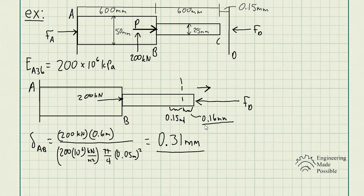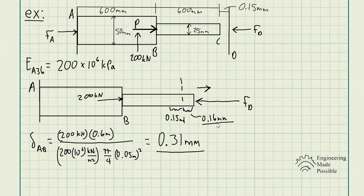It gets a little tricky when dealing with a gap. Keep in mind the initial gap does not contribute to the reactionary force at all because there is no contact. That's why it's important to first solve for the total deformation, and then determine how much force is required to deform the assembly back to where the wall is — in this case, 0.16 millimeters.